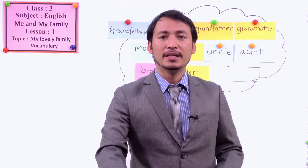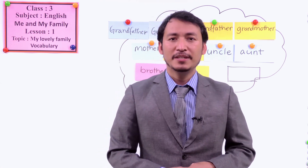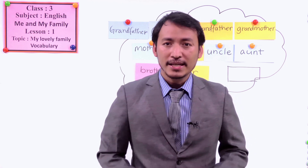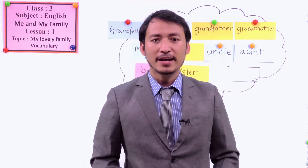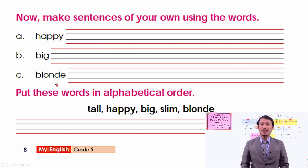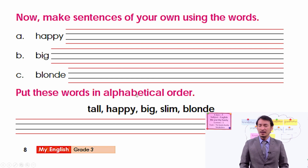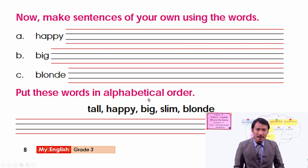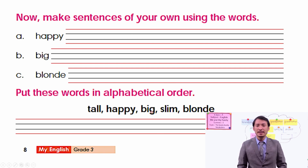Now let's do this activity from page number 8 of your book. Are you ready? Now let's make sentences with these describing words — happy, big, and blonde. And we are also going to order the words in alphabetical order. The words are given here: tall, happy, big, slim, and blonde.